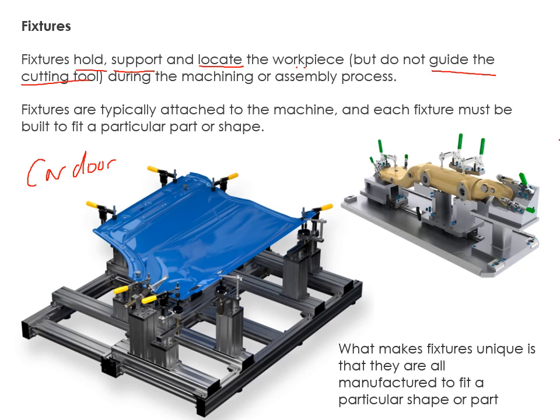Here you can see a car door — this whole large assembly is the fixture, and all the little clamps are holding that specific piece of work in place. That's quite a complicated shape, and if it wasn't held properly and slipped while being drilled, it would cost a lot of money and time to replace. Similarly, holding complex shapes allows you to perform other machining processes on them.